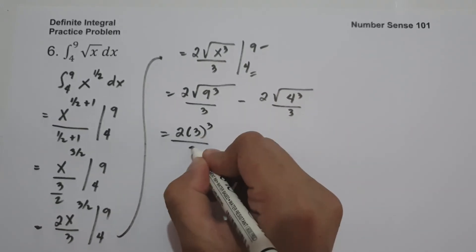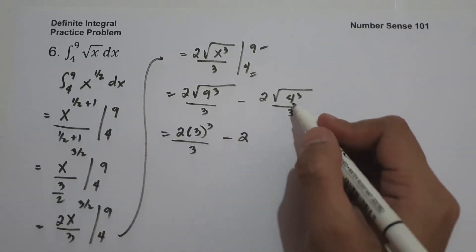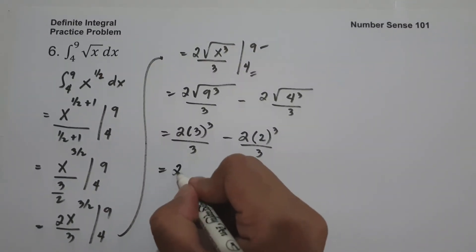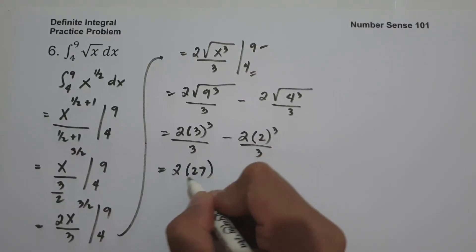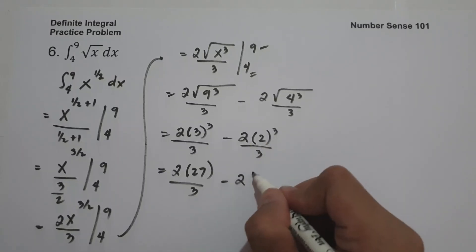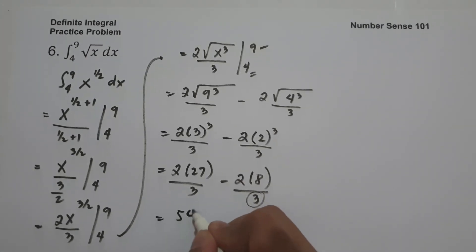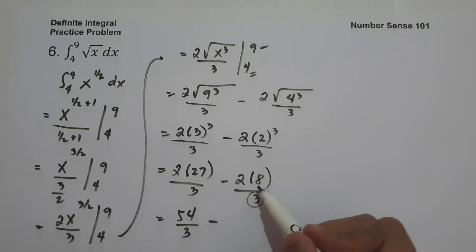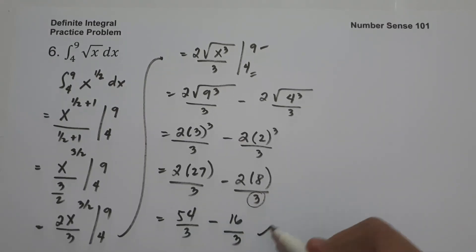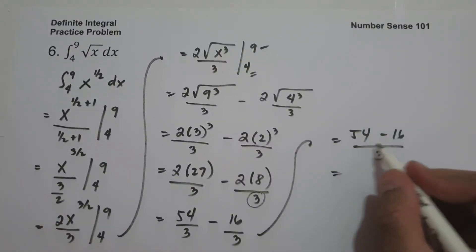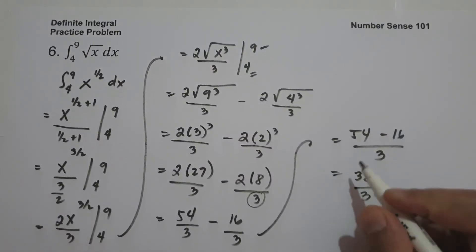The square root of 9 is 3, so 3 cubed is 27, giving 2 times 27 over 3, which is 54 over 3. The square root of 4 is 2, so 2 cubed is 8, giving 2 times 8 over 3, which is 16 over 3. So we have 54 over 3 minus 16 over 3, and 54 minus 16 is 38. The final answer is 38 over 3.